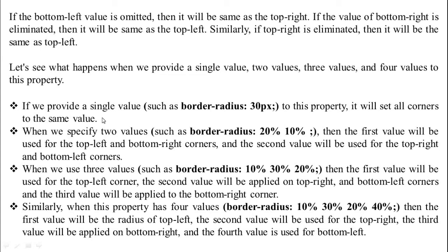If we provide a single value — such as border-radius: 30px — it will set all four corners the same. When we specify two values such as border-radius: 20% 10%, then the first value will be used for the top-left and bottom-right corners, and the second will be used for the top-right and bottom-left corners.